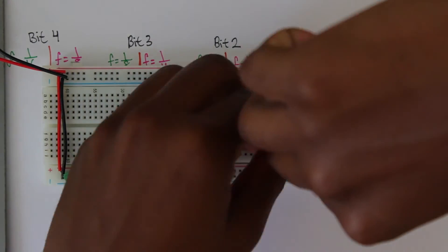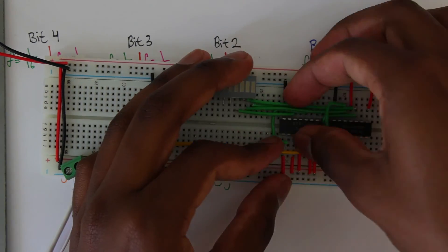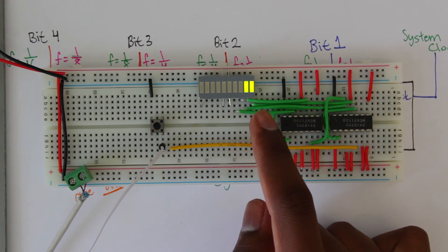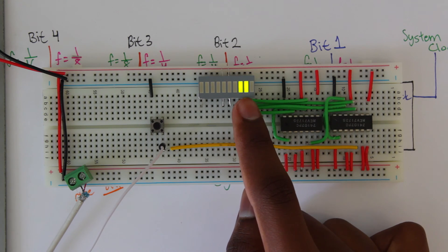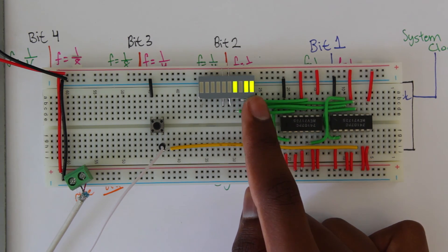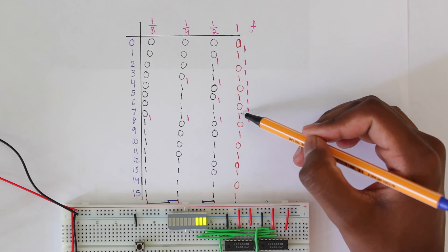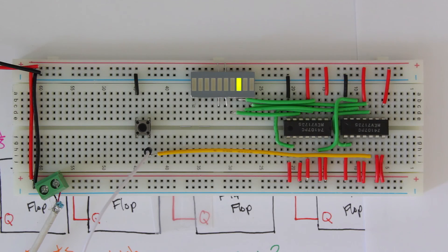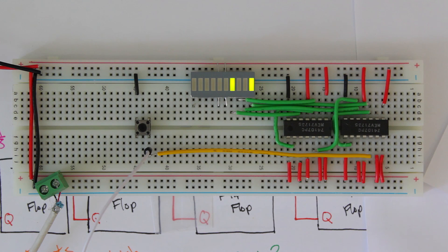The fix is easy — just remove that wire and replace it with the correct one going to the right spots. Plugging it in, everything looks like it's working. It's counting all the way up. Comparing to the binary values we wrote earlier, everything checks out. This will be our program counter, or at least the heart of it.